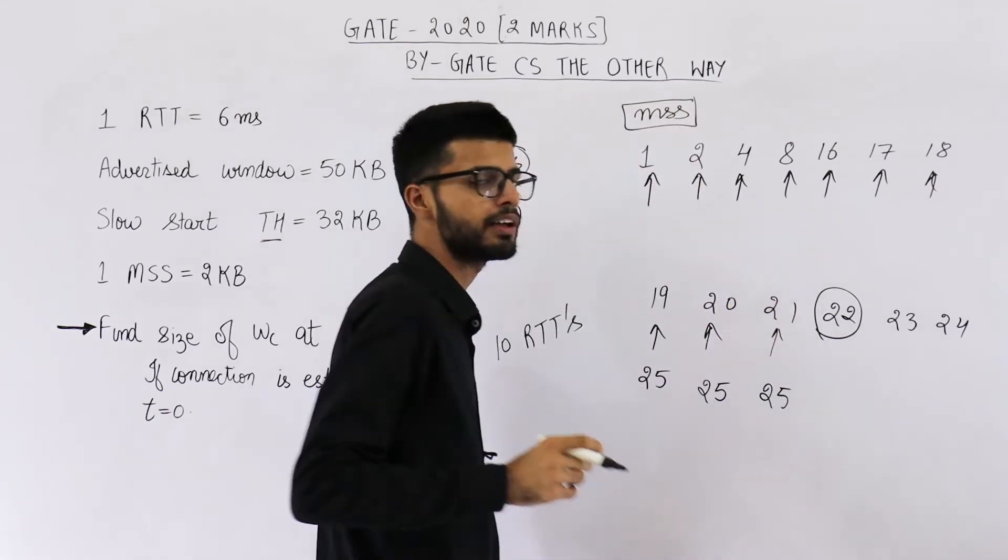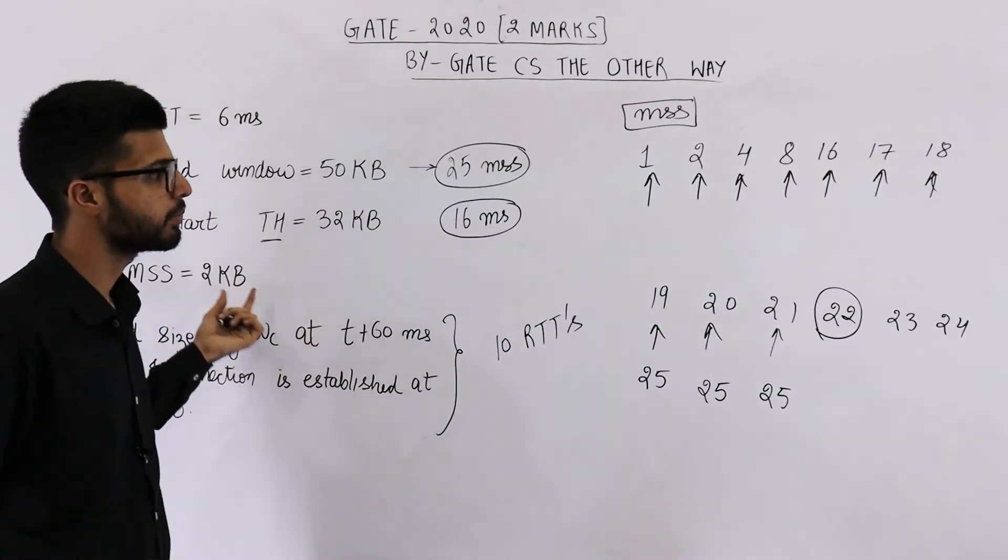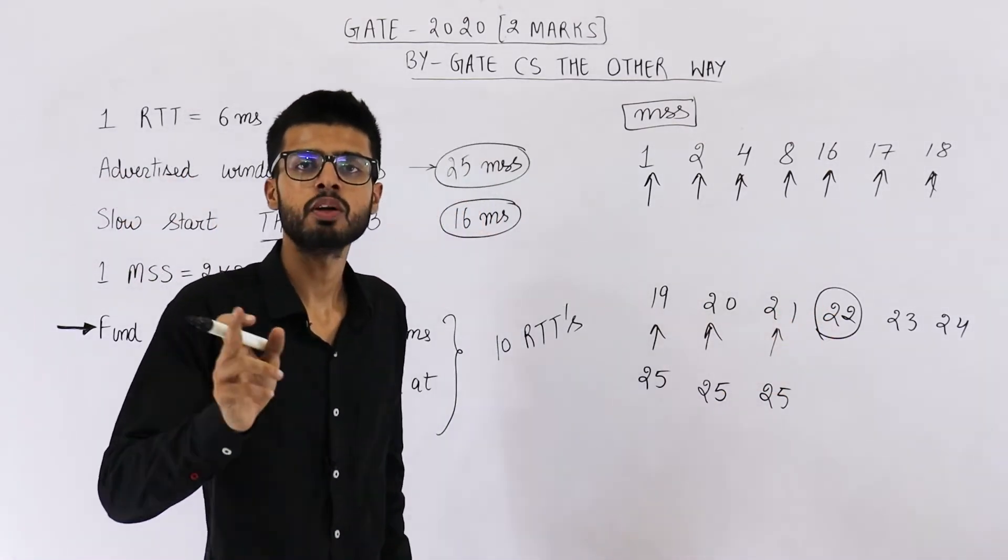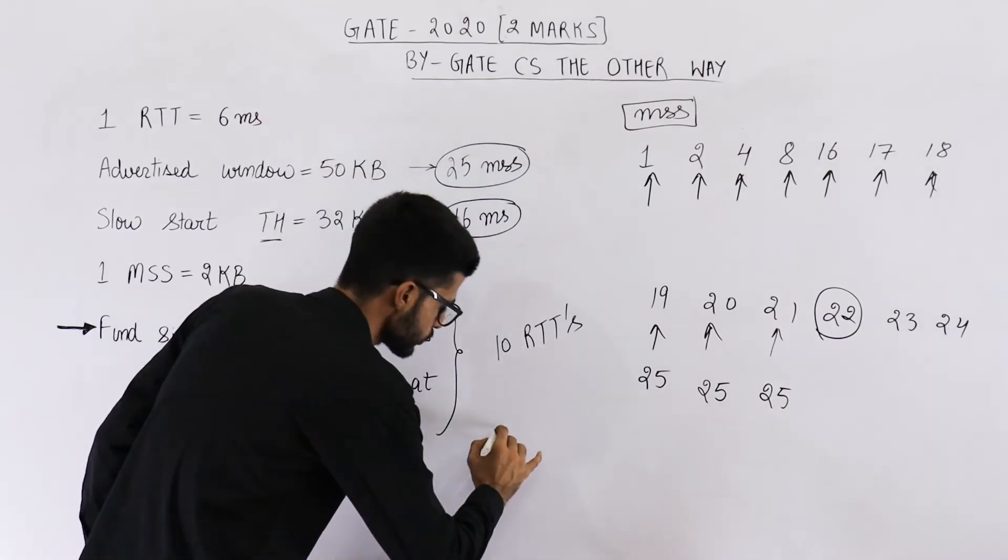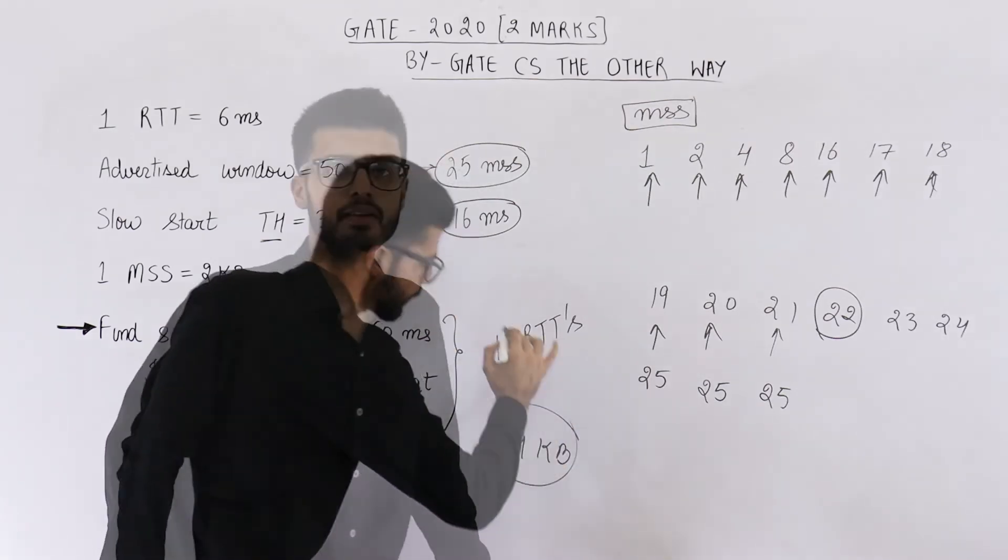Now the size is 22 MSS. If 1 MSS is of 2 KB, in KBs, what will be the size? It will be 22 into 2 KB. That is 44 KB. So answer to this question is 44 KB.